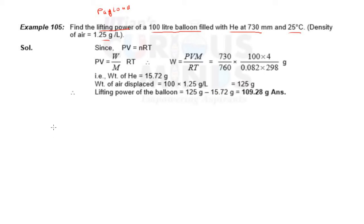So we have a 100 liter balloon filled with helium at 730 millimeter. It is not given the weight of the balloon, just the gas. The volume, the weight of the helium, temperature and pressure - everything is given.